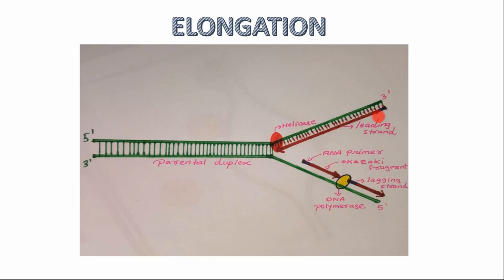DNA polymerase reads the DNA molecule from 3' to 5' but adds the dNTPs from 5' to 3'. Because the direction of DNA polymerase is 5' to 3', on one strand it will keep adding continuously, but on the other strand the direction is reversed, so the addition of dNTPs will be discontinuous.